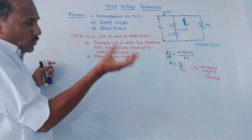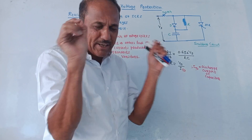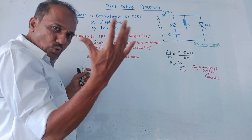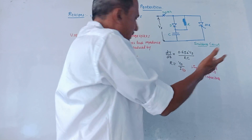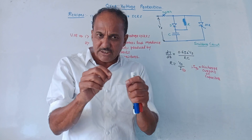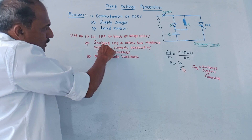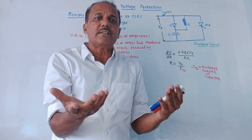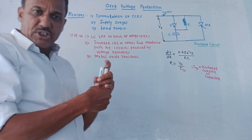To provide protection against overvoltage, we can use LC, that is Inductor-Capacitor Low Pass Filter (LC LPF), at the input side. As the name indicates, this low pass filter stops high frequency voltage spikes. Second, we can use the snubber circuit, which offers low impedance path for the current produced by voltage transients. Voltage transients means sudden voltage spikes. Third, we can use metal oxide varistors (MOVs) to limit the excess voltage. These are the three major techniques used to provide protection against overvoltage.